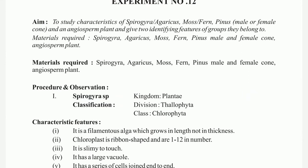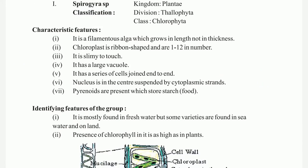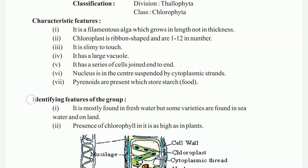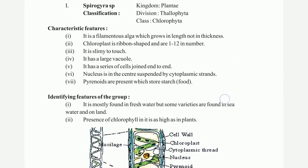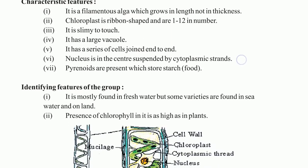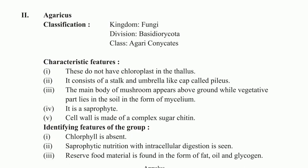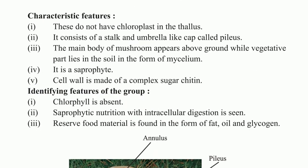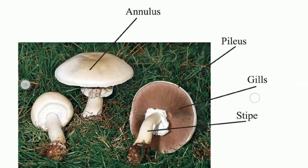Experiment number 12: to study Spirogyra, the most famous alga. Material required, procedure, characteristic features, kingdom, division, class, and identifying features of the group are shown. Features include presence of chlorophyll, cell wall, chloroplast, nucleus, cytoplasm, large vacuole. It is a filamentous alga which grows in length, not in thickness. Classification covers kingdom, division, and class with characteristic features.